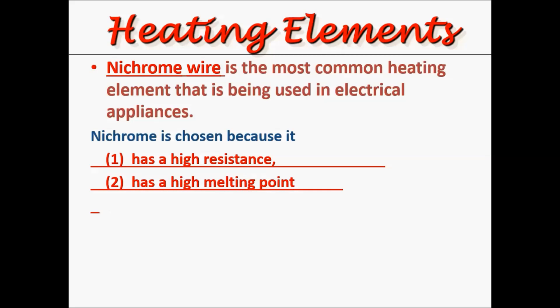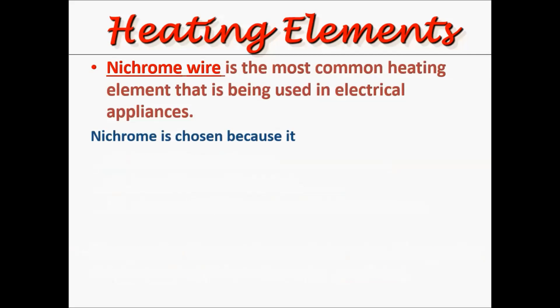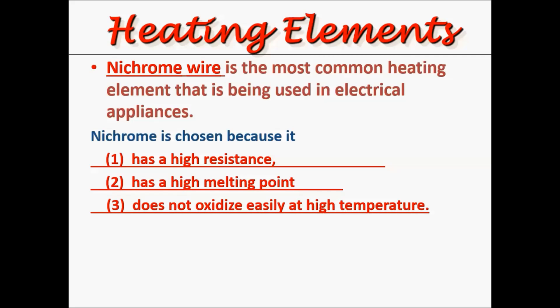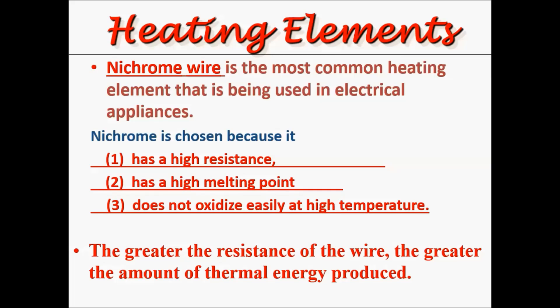Nichrome wire is the most common heating element used in electrical appliances. Nichrome is chosen because it has three important properties. The first is that it has a high resistance — only a wire with high resistance will be able to convert electrical energy into thermal energy at a high rate. The second is that Nichrome has a high melting point, so that when a lot of current passes through it and it heats up to a high temperature, the wires will not melt. The third is that Nichrome does not oxidize easily at high temperatures — oxidize means to rust — so Nichrome does not rust easily. The greater the resistance of the wire, the greater the amount of thermal energy that will be produced.